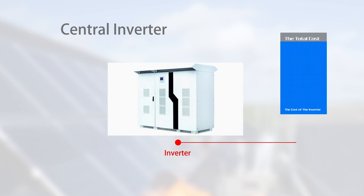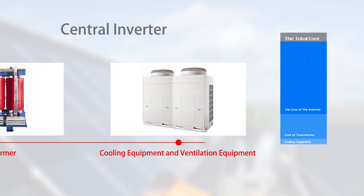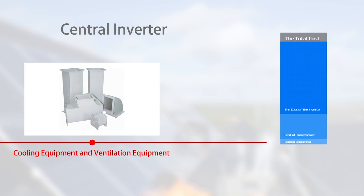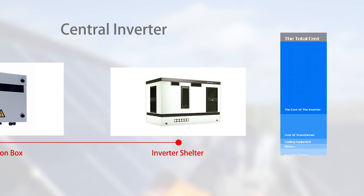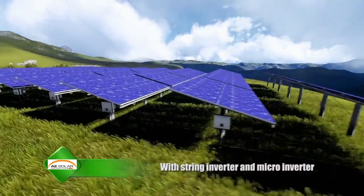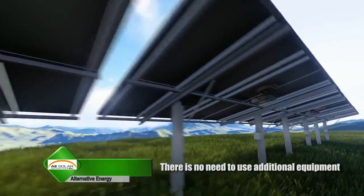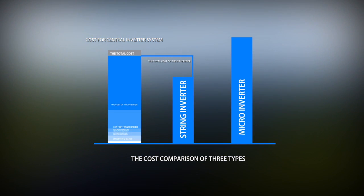System total cost analysis: if you select a central inverter, you will also need to configure a transformer, cooling equipment, ventilation equipment, protection equipment, distribution box, and inverter shelter. With string inverter and microinverter, there is no need for additional equipment. Therefore, though the cost of a central inverter unit is cheaper, you will end up paying more in total additional costs than with a string inverter.